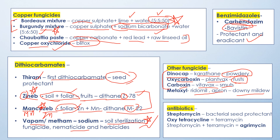Now we have bacterial control. In bacterial antibiotics, Oxytetracycline — with the trade name Terramycin — is a seed protectant. For Streptomycin combined with Terramycin, the trade name is Agrimycin. These are bacterial antibiotics that control both types of bacteria. I hope you will understand it very well.